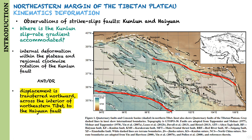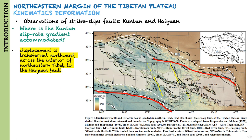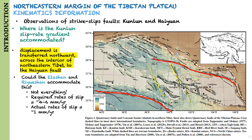Another possibility is that displacement is transferred northward, across the interior of northeastern Tibet, to the Haiyuan fault. Focusing on this second possibility, a recent inversion of geodetic and geologic data suggests that slip along the Elashan and Riyuexan faults could indeed accommodate slip rate gradients along the eastern Kunlun fault.